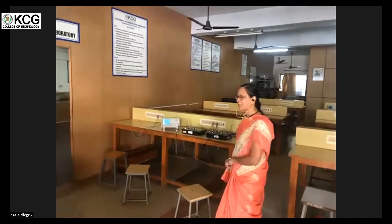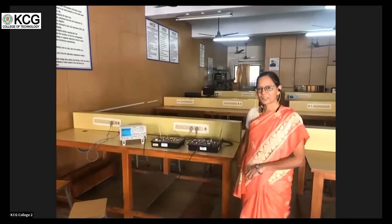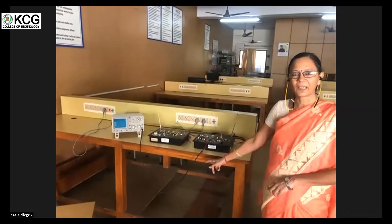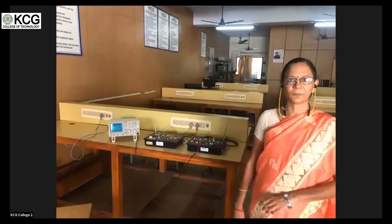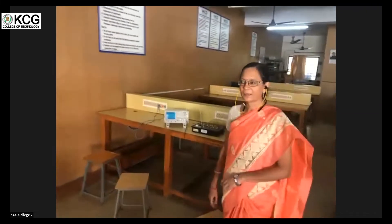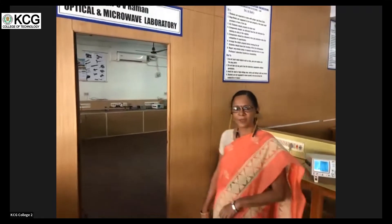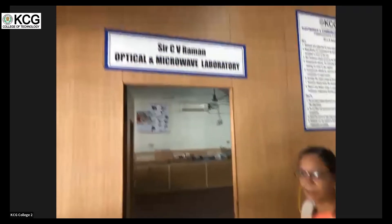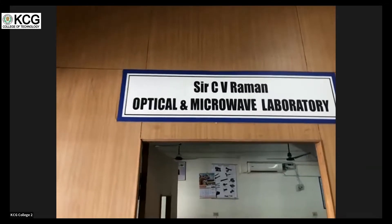In this lab we perform various experiments relating to analog and digital communication. The one you are seeing is an analog communication experiment related to amplitude modulation. Digital communication is the technology used in recent-day mobile communication. The next lab we are entering is the CV Raman Optical and Microwave Lab. Recently, optical fiber was launched by our Prime Minister between Chennai and the Andaman and Nicobar Islands — one such lab is this optical lab, where information is transmitted in the form of light.